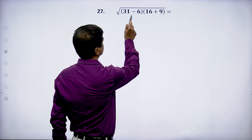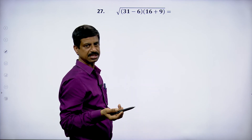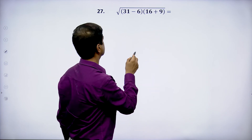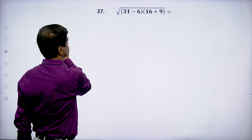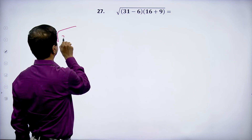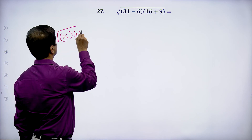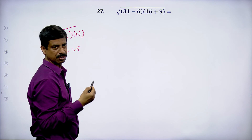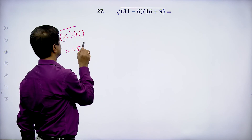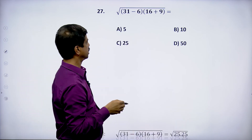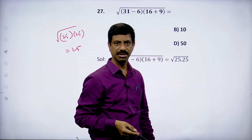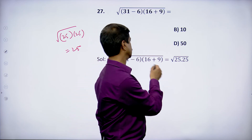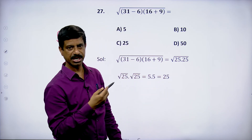Simplify √(31 - 6·√(16+9)). This equals √(31 - 6·5) = √(31-30)... actually this is √(25·25) which equals 25. Answer is 25.